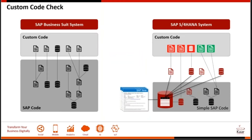SAP has taken care to ensure that they keep this change minimal. They provide things like CDS to ensure that the data model changes you have to make on your ABAP code are much lesser. But in spite of it, there would be about a 20 to 30% remediation that will have to be done on the ABAP code. So if that is not done, your existing custom code would not work.